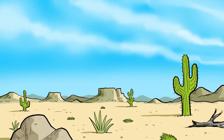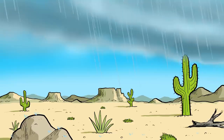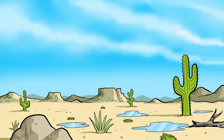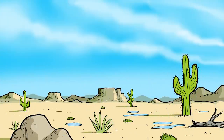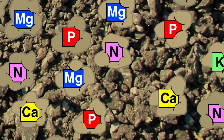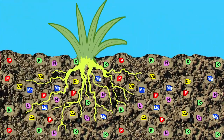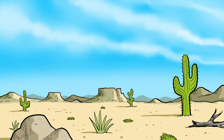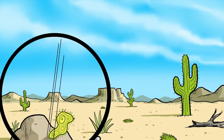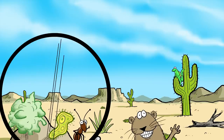Not all deserts are sandy, but they are all dry. They form in areas that receive little rainfall or snow melt, or where the water evaporates more quickly than it can be replenished. The lack of moisture means that minerals are trapped inside the soil particles, so there are very few minerals to support plant growth. However, there are still organisms that live in desert soils, such as microbes, lichens, ants, rodents, and reptiles.